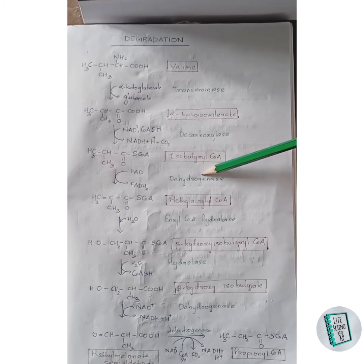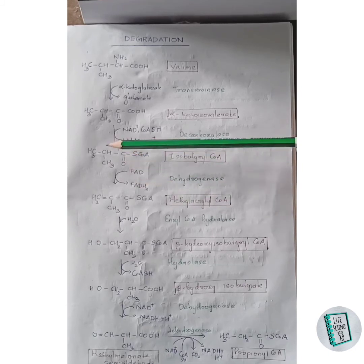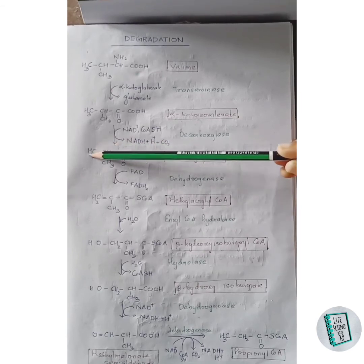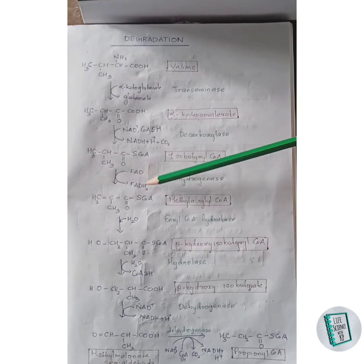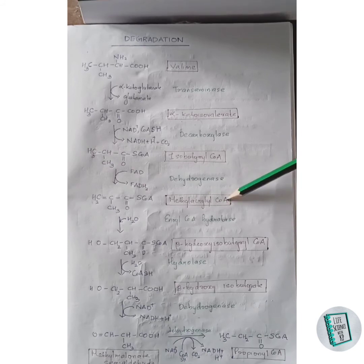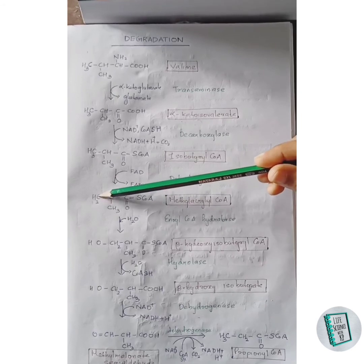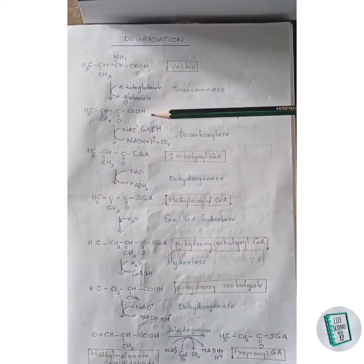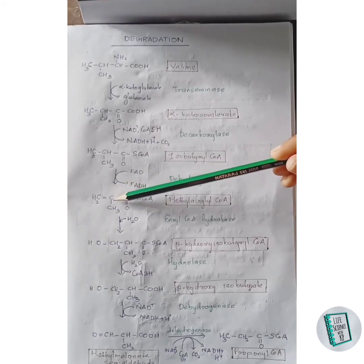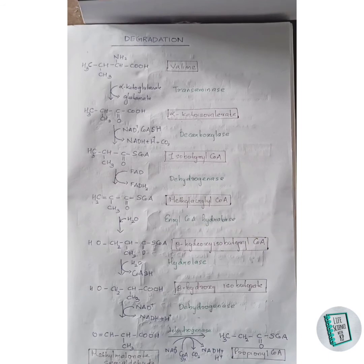In the third step of degradation, isobutyryl-CoA undergoes dehydrogenation in the presence of dehydrogenase enzyme to form methyl acrylyl-CoA. FAD acts as a coenzyme, and two hydrogens are removed — one from each specified carbon — with FAD, forming FADH2. In the next reaction, methyl acrylyl-CoA undergoes hydration (addition of water) in the presence of hydratase and enoyl-CoA hydratase enzyme. The OH group of water attaches to the CH2 group and the remaining hydrogen attaches to this carbon, forming beta-hydroxy isobutyryl-CoA.